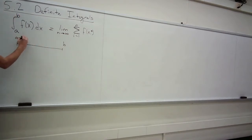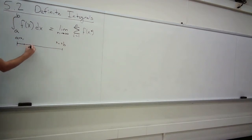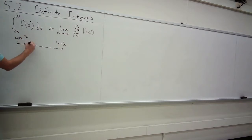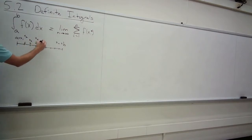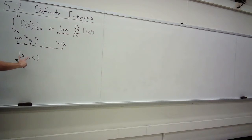We pick x_0, x_1, up to x_n, splitting [a, b] into lots of pieces, all the same width. x_2, x_3, x_4, and so on. Within each little interval, we pick some value and plug it into our function to get the height of the rectangle on that sub-interval.